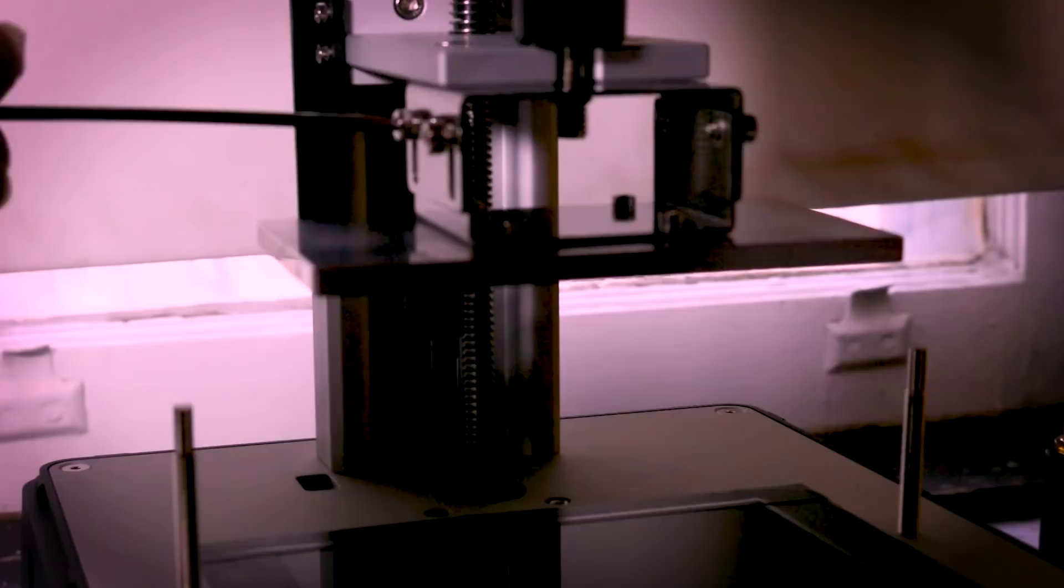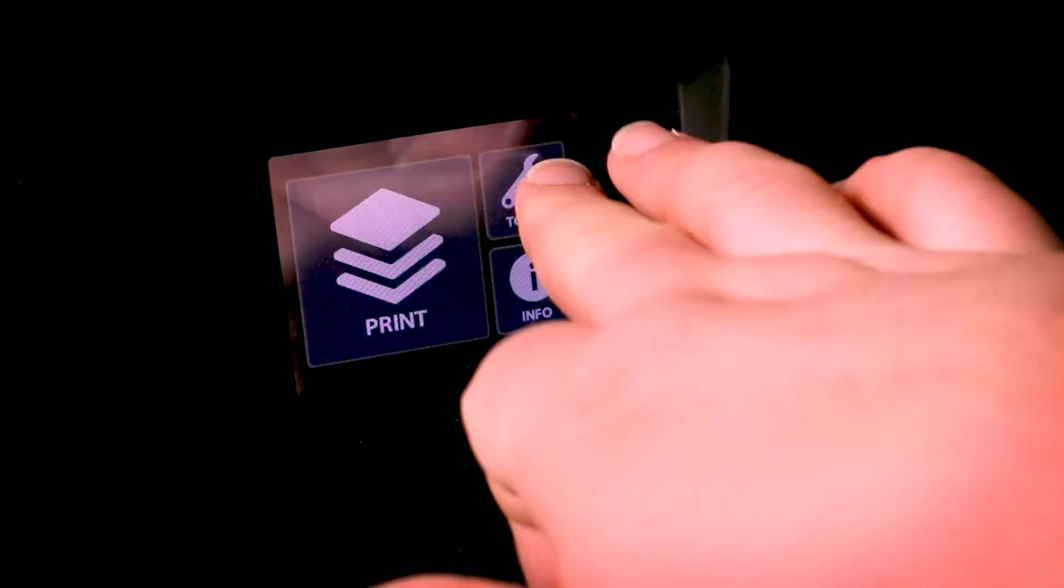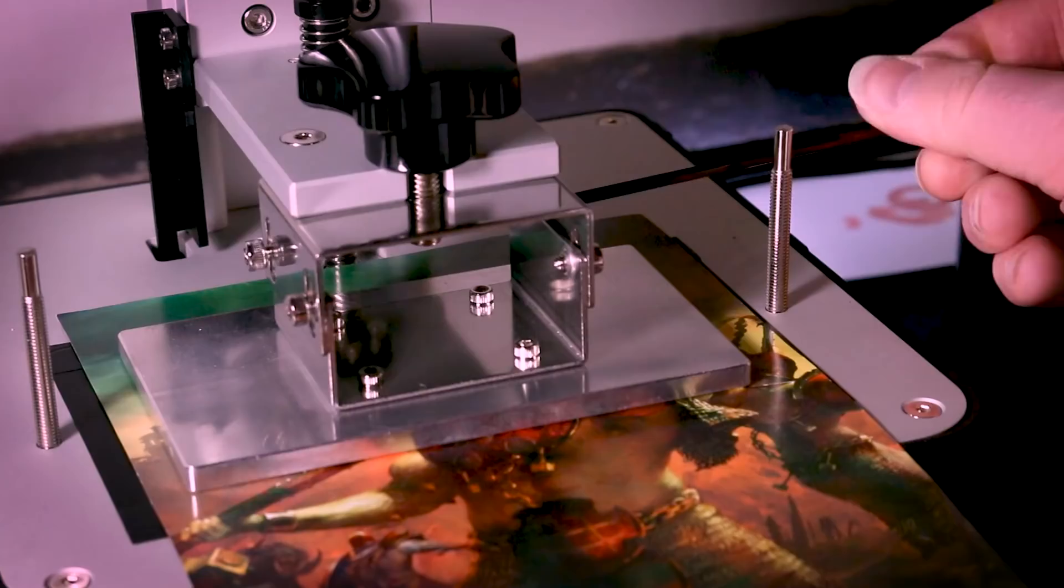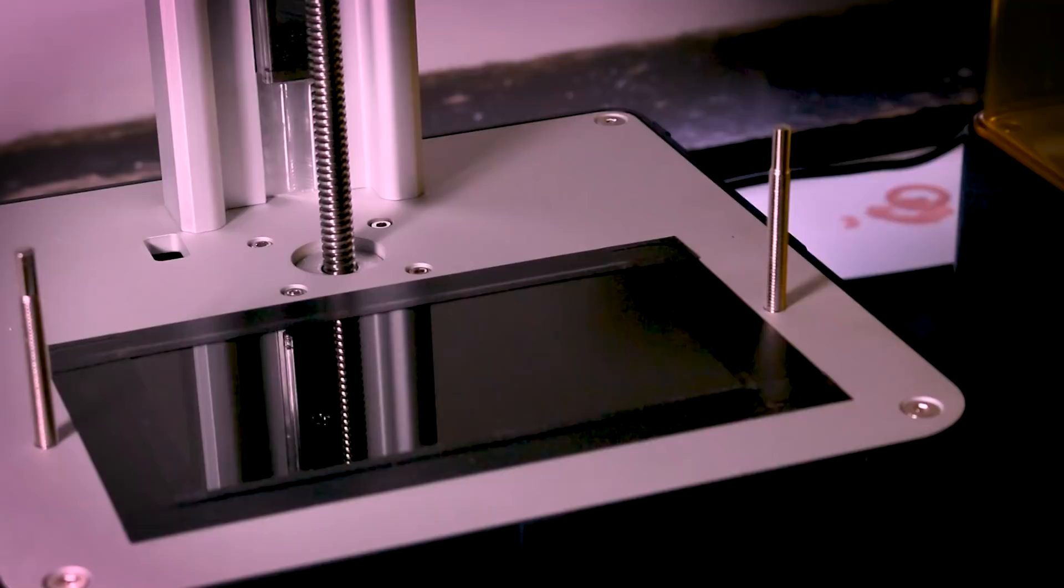Once I had all the machines and tools set up, I removed the goo tray and leveled the printing bed. This is a pretty boring process and it's pretty easy so I'm not going to go into detail here. We're just making sure the build plate is parallel to the LCD screen at the bottom. If you want a step-by-step guide on how to level your bed, just follow the instructions on your 3D printer manual and you should be fine.